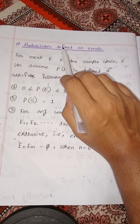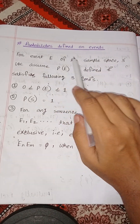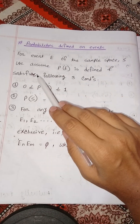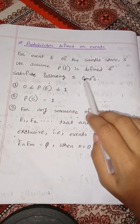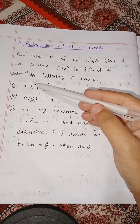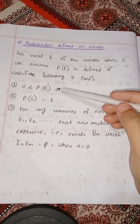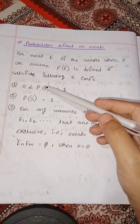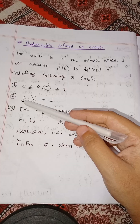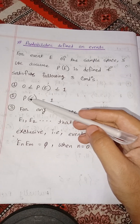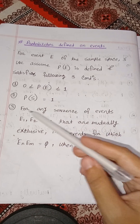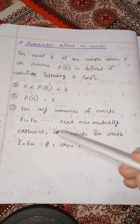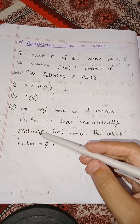The probability is defined on events. For event E of sample space S, we assume P(E) is defined and satisfies the following three conditions. The first condition is: 0 ≤ P(E) ≤ 1. The second condition is: P(S) = 1. The third condition involves any sequence of mutually exclusive events E1, E2, and so on.